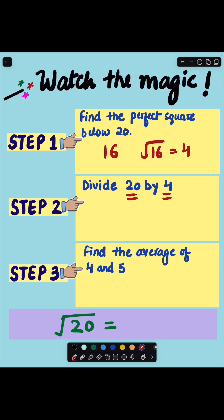Our step 2 is divide 20, which is our original number, by 4, which is the square root of 16, so it gives us answer 5. Now step 3 is find the average of 4 and 5.